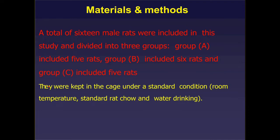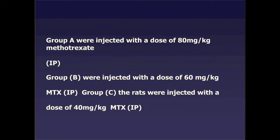All animals were kept in cages under standard conditions — room temperature, standard diet, and water. Group A was injected intraperitoneally with a dose of 80 mg/kg methotrexate. Group B was injected with a dose of 60 mg/kg, while Group C was injected with 40 mg/kg.